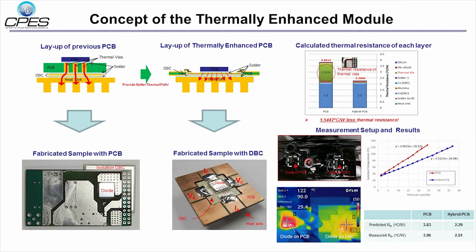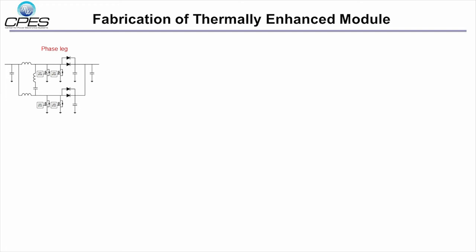This is the measurement result with junction temperature versus applied thermal load. The thermally enhanced module showed 35 degrees lower junction temperature at 24 watt thermal load. This result matched well with the predicted values, so the concept could be verified by these experiments.